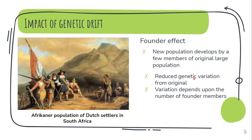A real example is the Afrikaner population of Dutch settlers in South Africa. A few Dutch people came to South Africa and founded a new population with the genetic variations of those founding members. One consequence was that Huntington's disease was more prevalent in this population because those Dutch founders carried that trait more frequently.